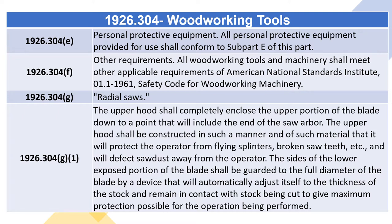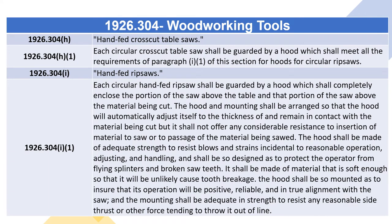1926.304(g) Radial Saws. 1926.304(g)(1): The upper hood shall completely enclose the upper portion of the blade down to a point that will include the end of the saw arbor. The upper hood shall be constructed in such a manner and of such material that it will protect the operator from flying splinters, broken saw teeth, etc., and will deflect sawdust away from the operator. The sides of the lower exposed portion of the blade shall be guarded to the full diameter of the blade by a device that will automatically adjust itself to the thickness of the stock and remain in contact with stock being cut.